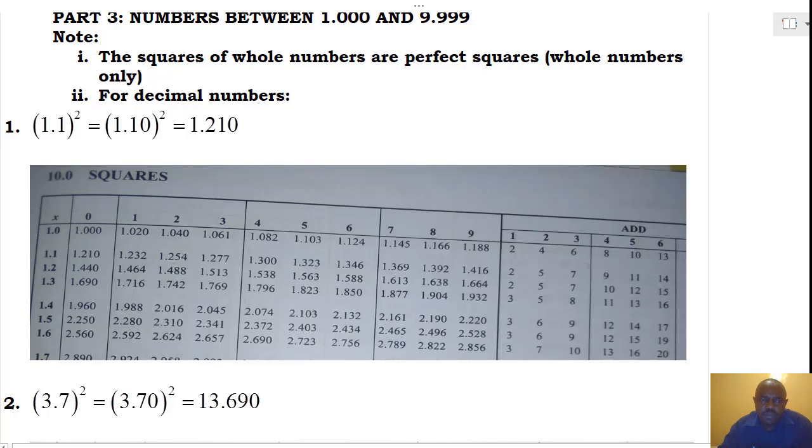Example number one, 1.1. Realize that in this question, we have only two digits. And the table for squares can be used to determine squares for values or numbers with more than three digits. Now, in position of the third digit which is not there, we are going to put a zero. Hence, our new number becomes 1.10.